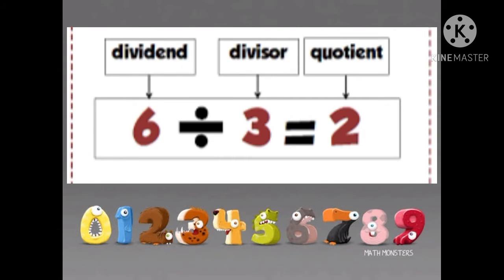We do division in two forms: horizontal and vertical. This one is the horizontal method. 6 divided by 3 equals 2. In this, we don't get a remainder. Only three parts are there: dividend, divisor, and quotient.